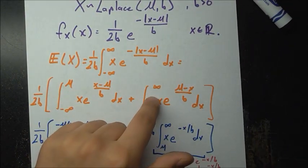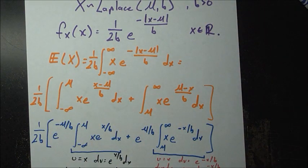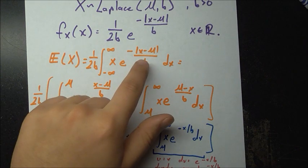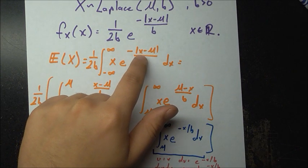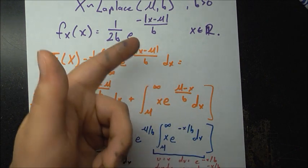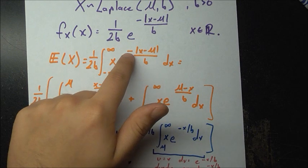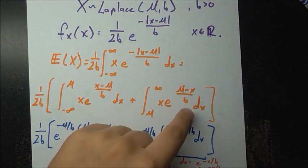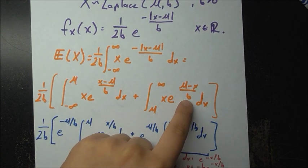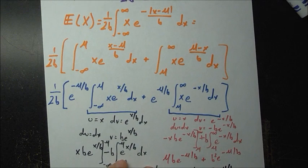In the other part, where x is greater than mu, x minus mu is correct since it is already positive. But then the negative sign flips it, so we have mu minus x in the exponent, divided by b. So now we have two integrals to deal with.